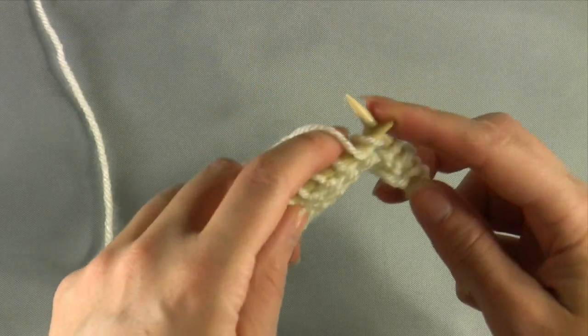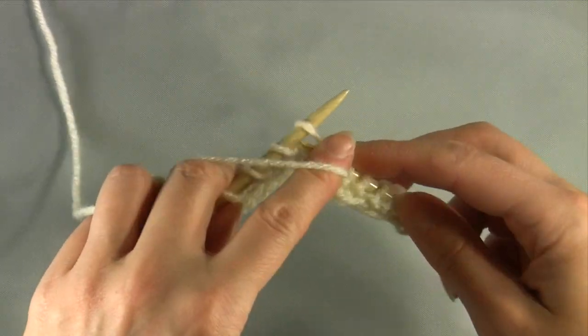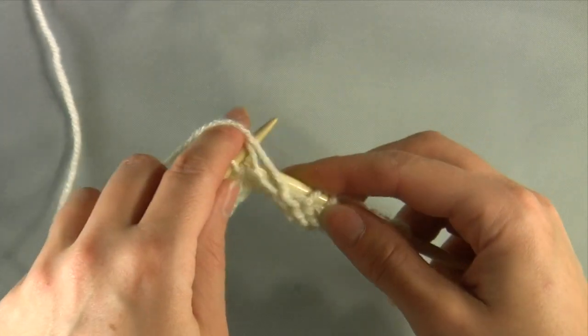Since the wrap and turn occurs for short rows, you will now proceed to purl to the end of your row.